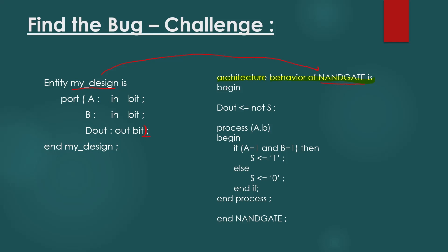Next, check the concurrent statement. 'dout' gets a value of not of 's.' But we didn't declare the signal 's.' So we need to declare a signal 's' between architecture and begin. Now look over the conditional statement. We are checking input a and input b with value 1, but this value is not inside single quotes. This is a bit value, hence values must be inside single quotes.